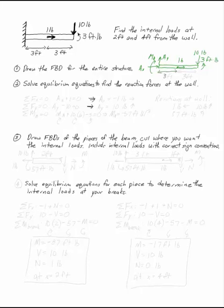The next thing I want to do is solve for my equilibrium to figure out what those reactions are at the wall. By the sum of the forces in x, I can say that Ax plus 1 equals 0, or rather Ax is negative 1 pounds.